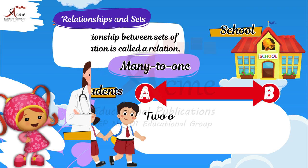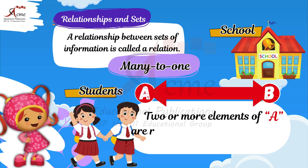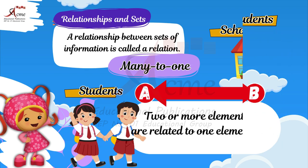Next, let's learn about a many-to-one relationship. Look at the picture of students and a school. Many students go to one school. This is called a many-to-one relationship.